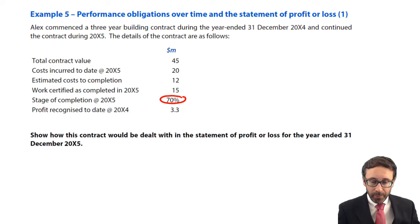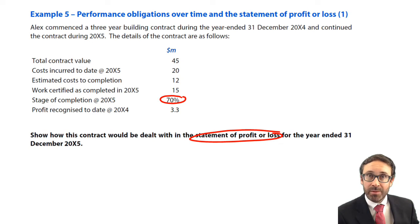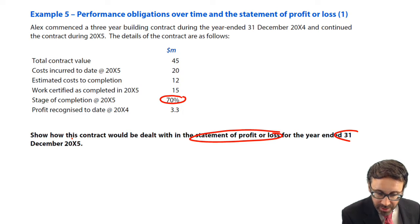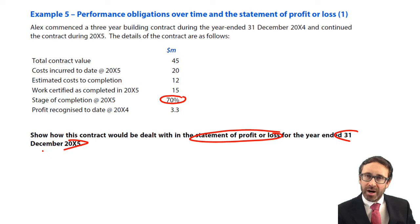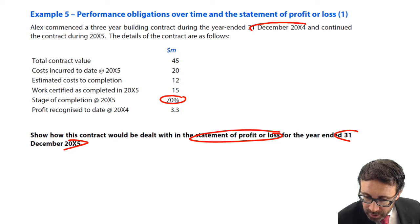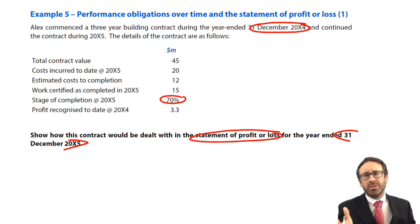Then we'll move on afterwards to start looking at how it impacts your statement of financial position. So you'll see that in this example, it wants us to look at how this contract will be dealt with within that statement of profit or loss for our reporting date there, December 20X5. So what have we got? It says that Alex commenced the three-year building contract.